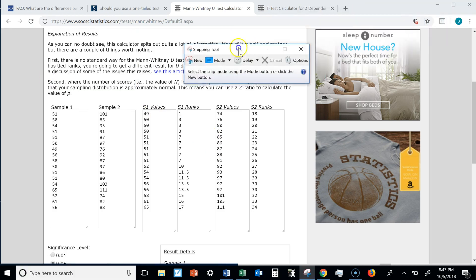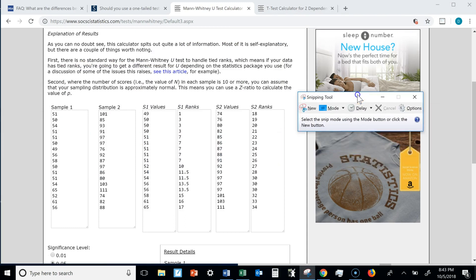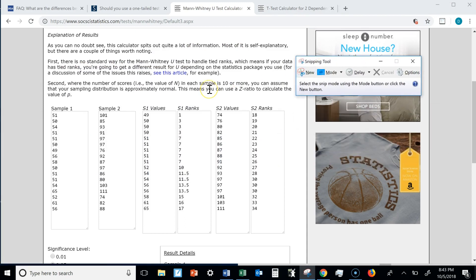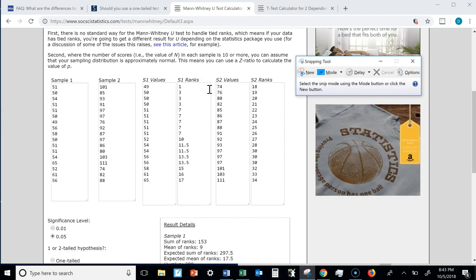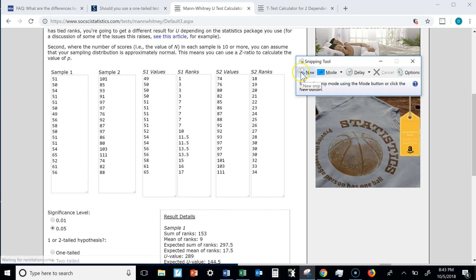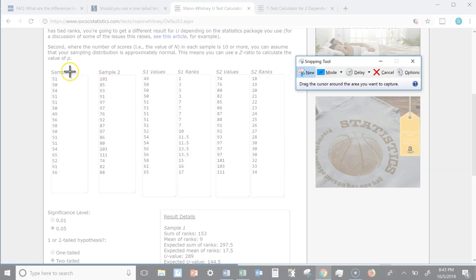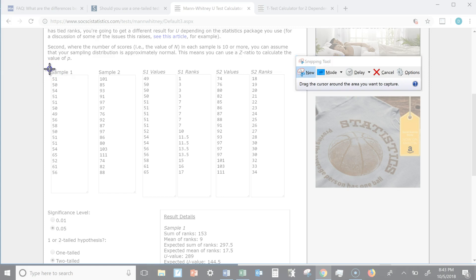This snipping tool allows you to take a screenshot really, really easily. So if I scroll down a little bit, I will click on New, New Snip. I highlight the thing that I want to screenshot, which is all of this data here.